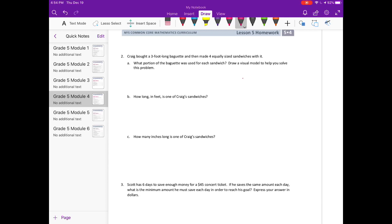Number two: Craig bought a three foot long baguette and then made four equally sized sandwiches within it. What portion of the baguette was used for each sandwich? Draw a visual model to help you solve the problem. So here's the baguette, and he splits it into four equally sized sandwiches. So there's one baguette and it's split into four equal parts. What portion is used for each sandwich? So we're saying the whole thing is one. Each portion would be one fourth per portion.